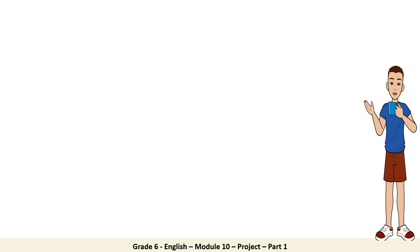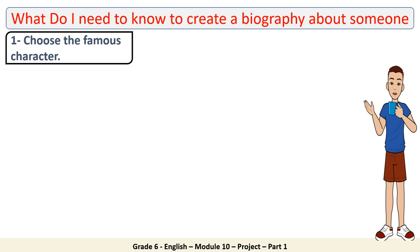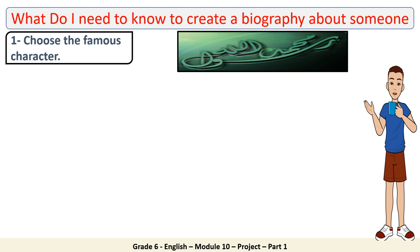This brings us to the basic question: what do I need to know to create a biography about someone? Let's go through the steps together with examples. The first step is to choose the famous character. Let's choose together the ultimate role model — the Prophet Muhammad, peace be upon him. Then we need to add more information and details to finish up our biography.